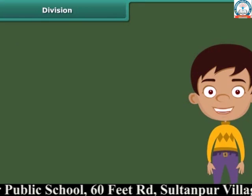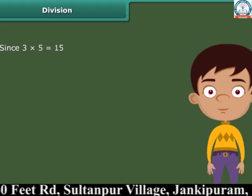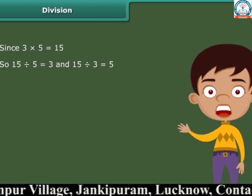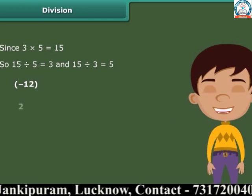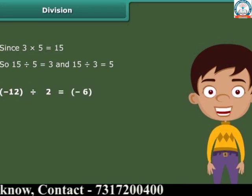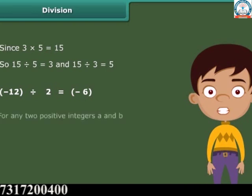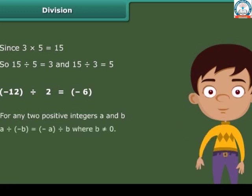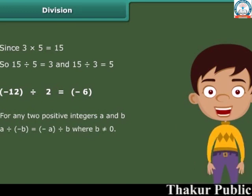Division is the inverse operation of multiplication. Since 3 times 5 equals 15, we have 15 divided by 5 equals 3 and 15 divided by 3 equals 5. When we divide a negative integer by a positive integer, we divide them as whole numbers and then put a minus sign before the quotient, giving a negative integer. In general, for any two positive integers A and B, A divided by minus B equals minus A divided by B, where B is not equal to 0.